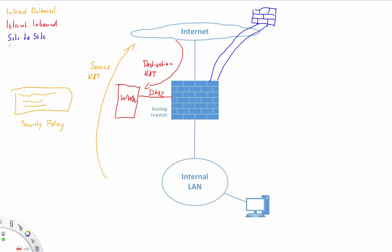The fourth service is our remote access VPN. Remote access VPN is obviously where you have users out and about - they can be third parties or your own employees - and they're establishing a VPN tunnel into the internal network, so classical remote access. Remote access is potentially the most tricky one to migrate, simply because vendors just do it in a different way.